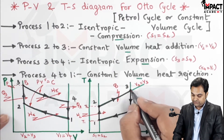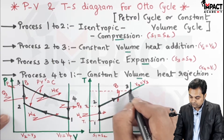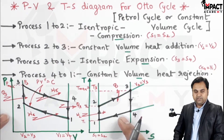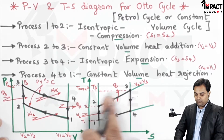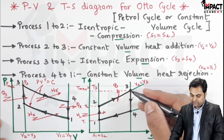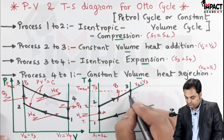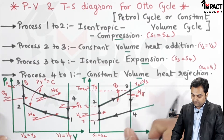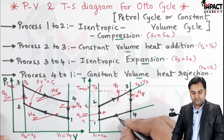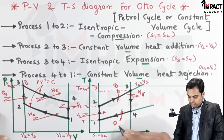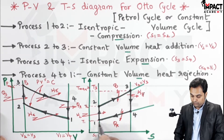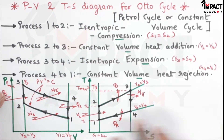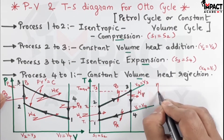This gives us the maximum temperature at point 3, so T_max equals T3. In the Otto Cycle, point 3 gives both maximum temperature and maximum pressure. Next, from 3 to 4 is the expansion process where work output is obtained from the system. From 4 to 1 is heat rejection — heat is rejected by the system, temperature drops from T4 to T1, and volume remains constant so V1 equals V4.